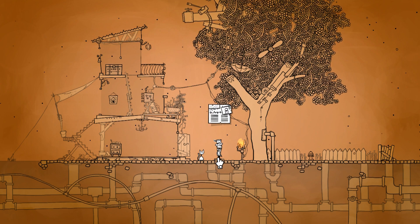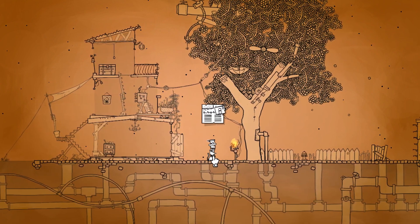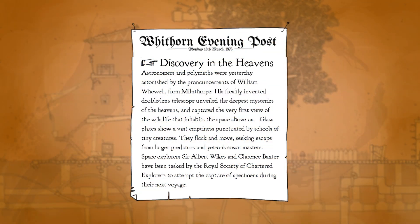What was that? What is it? Over it. Astronomers and polymaths were yesterday astonished by the pronouncements of William Wherewell from Milton. His freshly invented double-lens telescope unveiled the deepest mysteries of the heavens and captured the very first view of the wildlife that inhabits the space above us. Glass plates show a vast emptiness punctuated by schools of tiny creatures. They flock and move, seeking escape from larger predators and yet unknown masters. Space explorers Sir Albert Wicks and Clarence Baxter have been tasked by the Royal Society of Chartered Explorers to attempt the capture of specimens during their next voyage. Really? We have? This is news to us, but okay, we need specimens. For the Royal Society of Chartered Explorers. Wouldn't it be uncharted explorers, being that we're going into uncharted territory?